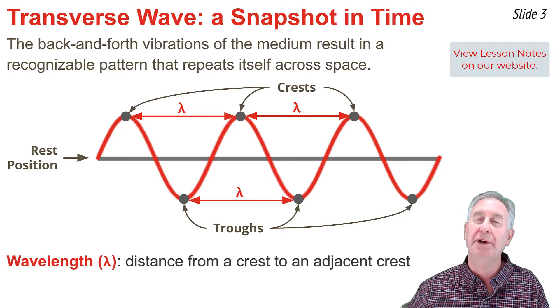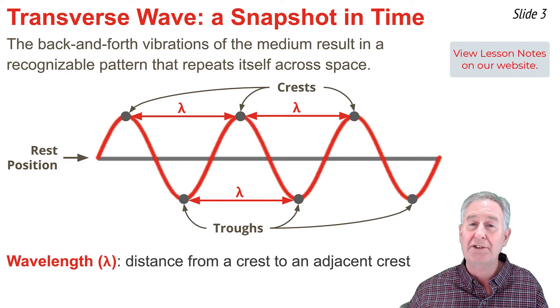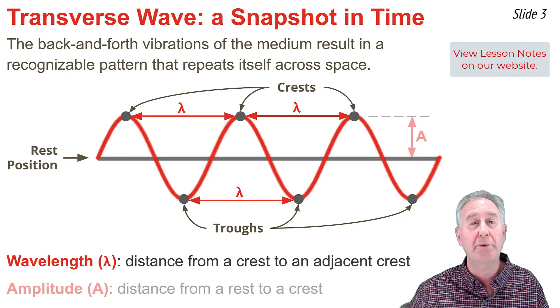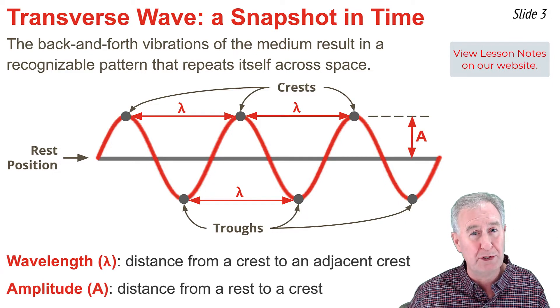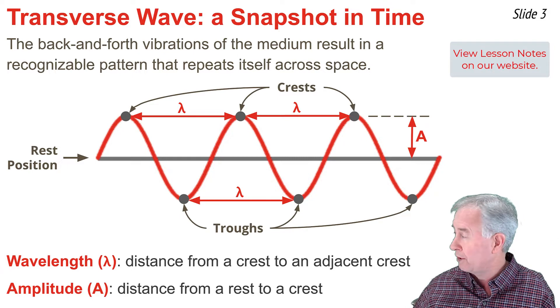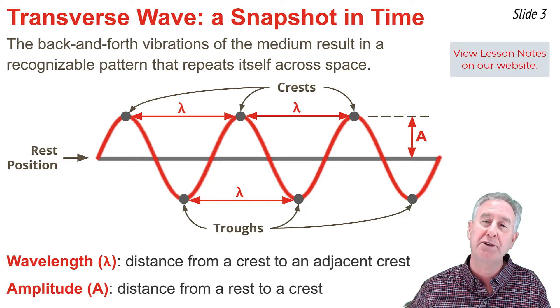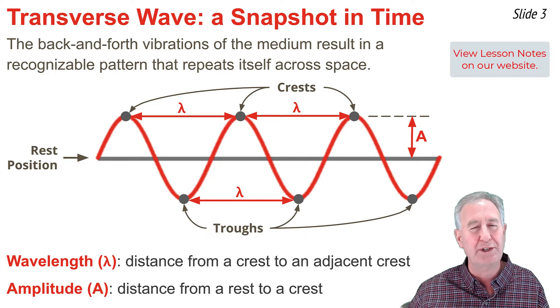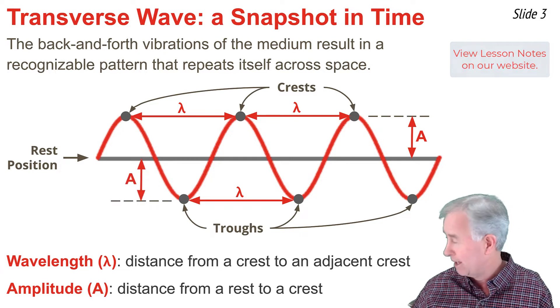The second quantity is the amplitude. It's the distance from the rest position to a crest position, as shown on the diagram. It could also be measured from the rest position to the trough position.